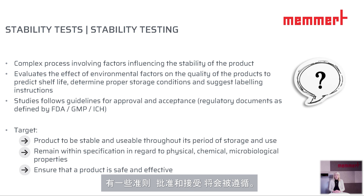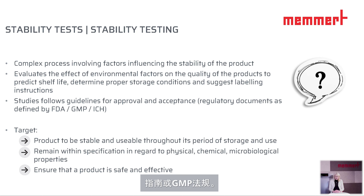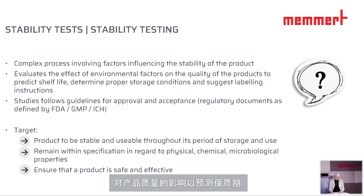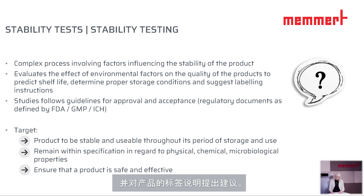There are guidelines for approval and acceptance which are going to be followed. This includes ICH guidelines, FDA guidance, and GMP regulations. Stability testing evaluates the effect of environmental factors on the quality of the product to predict a shelf life, determine proper storage conditions, and suggest labeling instructions for the product.